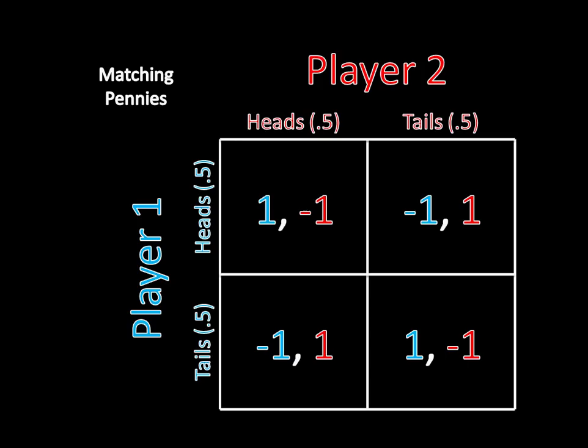Remember in the last video we covered matching pennies. We saw that there weren't any pure strategy Nash equilibria. And we guessed — actually correctly — that if both players flipped their coins, then each player would be indifferent between choosing heads or tails, and so neither player could change his or her strategy and expect to do better, which met the definition of Nash equilibrium. So flipping a coin served as a mixed strategy Nash equilibrium.